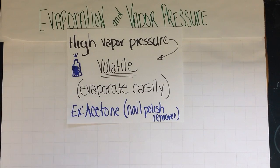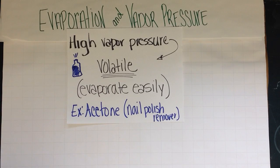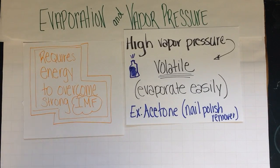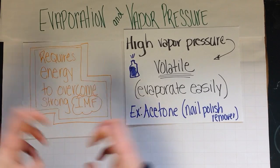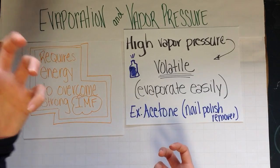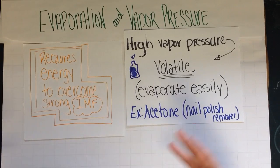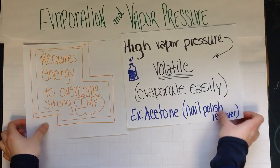An example of a liquid you may have come into contact with is acetone, found in nail polish removers. It's very volatile — you leave the cap off acetone and it will evaporate very quickly. This must mean that its intermolecular forces are not that strong, because they can break apart and leave the surface, so the energy needed to do that must not be a lot. That's an important connection to make.